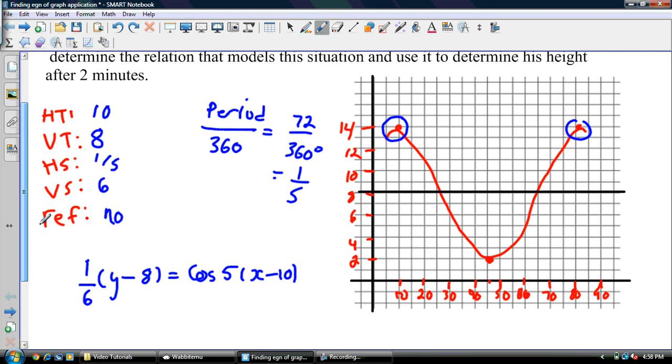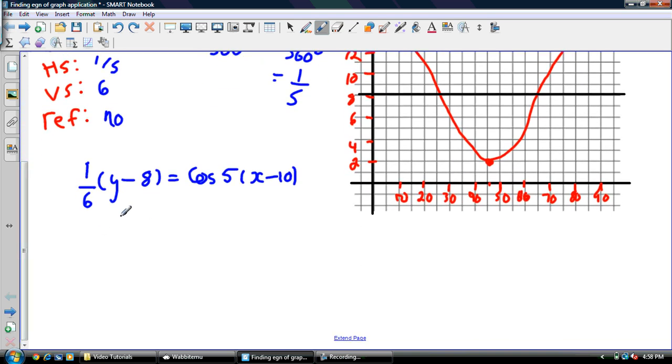Now all we have to do is find the height at 2 minutes. So 2 minutes is 120 seconds. Everything we did was in terms of seconds, so this has to be in terms of seconds as well. First thing I'll do is put it in standard form. So I got y = 6cos(5(x - 10)) + 8. Don't forget my plus 8.